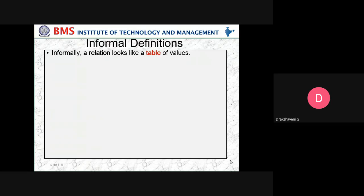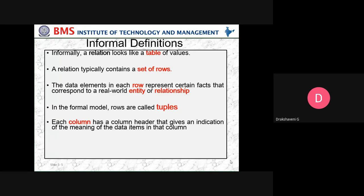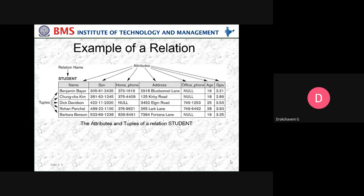The informal definition: informally, a relation looks like a table of values. A relation typically contains a set of rows. The data elements in each row represent certain facts that correspond to a real-world entity or relationship. In the informal model, rows are called tuples. Each column has a column header that gives an indication of the meaning of the data items in that column. In the informal model, the column header is called an attribute name, or simply an attribute.